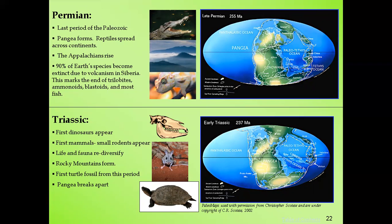Ninety percent of Earth's species became extinct due to volcanism in Siberia. Many organisms that had previously thrived — plants and animals — went extinct. This marks the end of trilobites, ammonoids, blastoids, and most fish at the end of the Permian period.